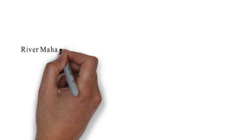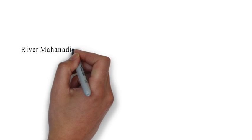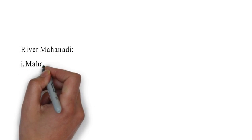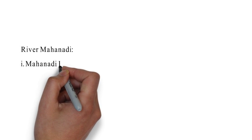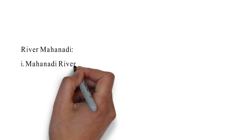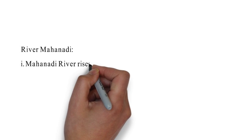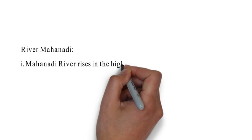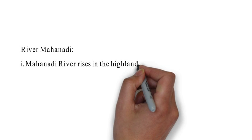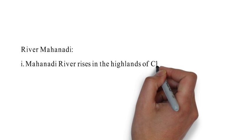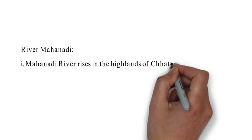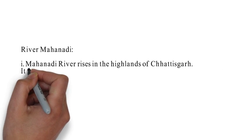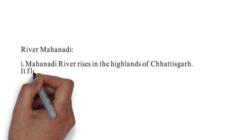Moving ahead, we will be discussing all the major important rivers of the peninsular river system. First among them is the river Mahanadi. The Mahanadi river rises in the highlands of Chhattisgarh, mainly the Sivaha district of Raipur in Chhattisgarh. It flows through Odisha into the Bay of Bengal, and throughout its course it drains parts of Madhya Pradesh, Chhattisgarh, and Odisha.